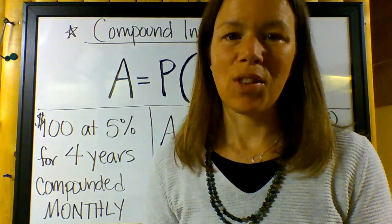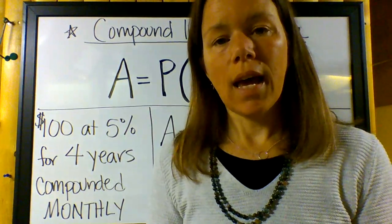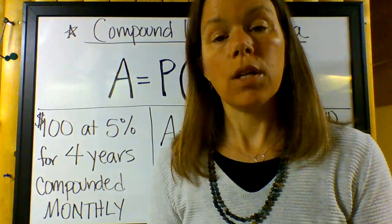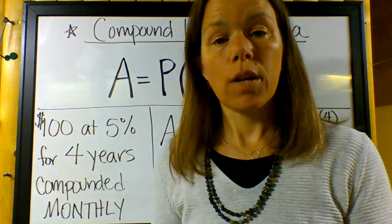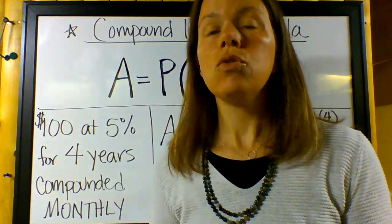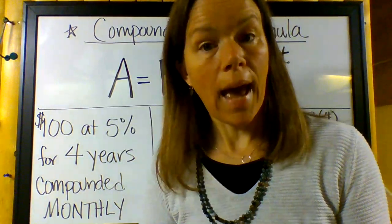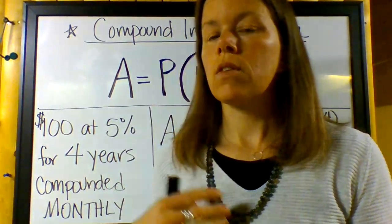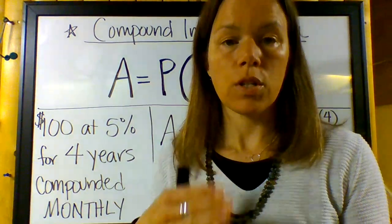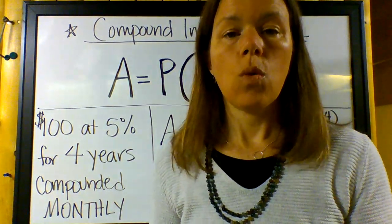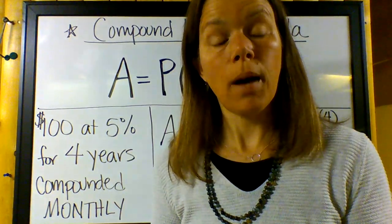So today we're going to talk about what if interest is compounded more often than at the end of the year. What if it is compounded two times a year? That would be semi-annually, like every half of a year. What if it's compounded quarterly? That means every three months or four times per year. What if it's compounded monthly? That's at the end of each month, so 12 times per year.